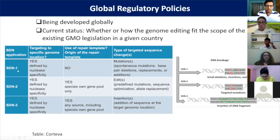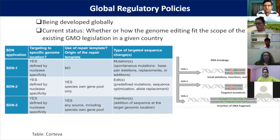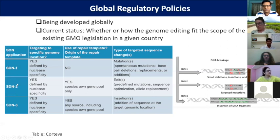SDN1 is what I mostly discussed: when you use Cas9, you make a cut and the random insertion or deletion causes a knockout. It is a random insertion or deletion of one, two, or maybe two to three base pairs. That extra insertion and deletion is what is classified as SDN1.